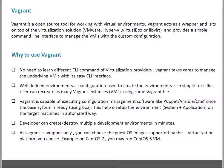The second benefit is a well-defined environment, as the configuration used to create the environment is stored in simple text files. Users can recreate as many Vagrant instances with the same Vagrantfile and the same configuration. With Vagrant, all configuration and specifications are saved in a single file called the Vagrantfile. If you want to recreate or create multiple instances with the same config, you can reuse that simple text file, which is easy to understand.